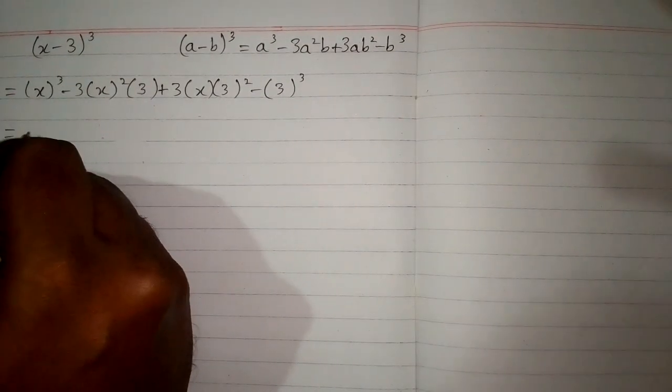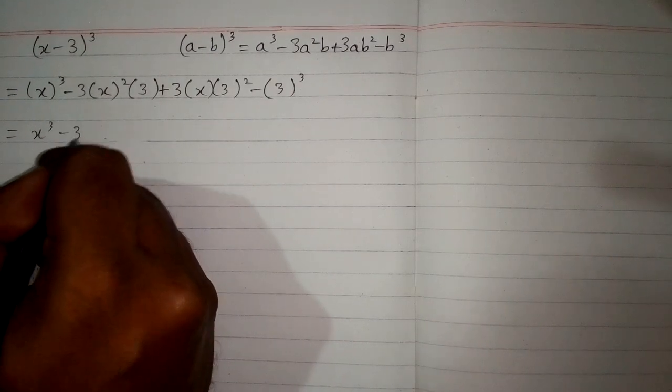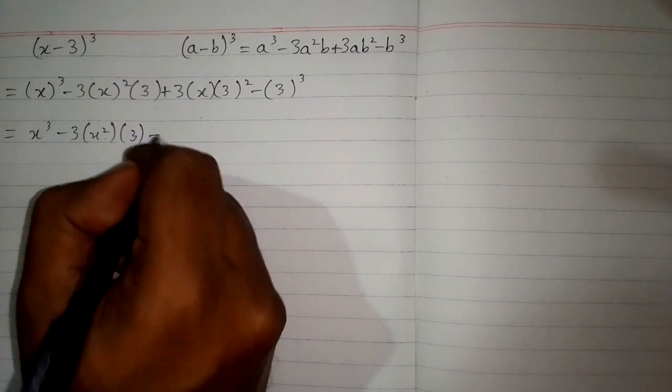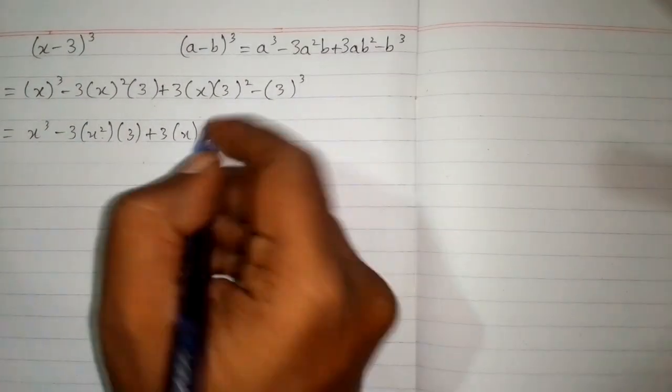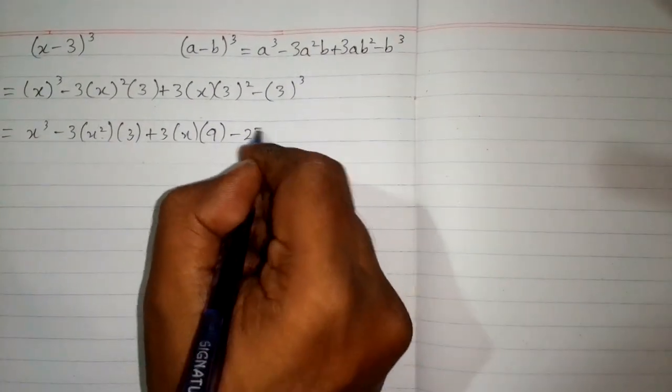Now the cube of x is x³. And then minus 3 times the square of x is x². The square of 3 is 9, and the cube of 3 is 27.